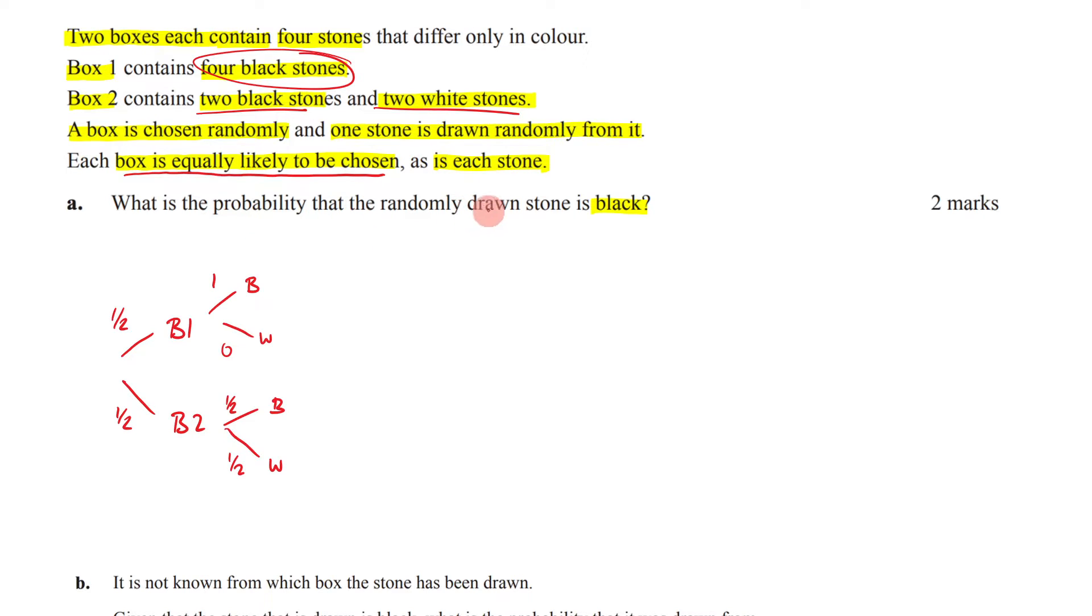And now it's saying, what's the probability that the randomly drawn stone is black? So that means what we want to consider is we want to consider this, and we also want to consider that. So that means I'm going to go, what is a half times one? Well, that's one. And over here, I'm going to go, what's a half times a half? That's going to be, oh sorry, a half times one is a half. My apologies, people.